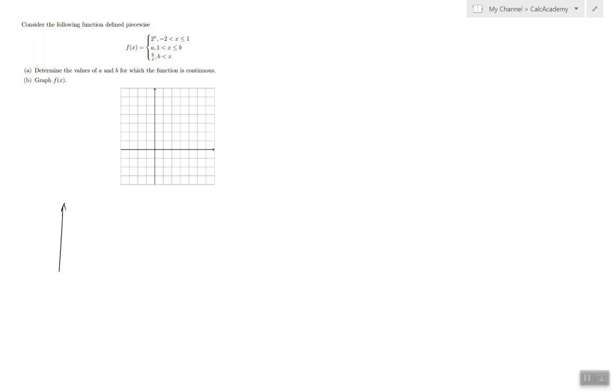Do we know what the graph of 2 to the x looks like? Yes, it's going to be something like this. Do you know what the graph of a looks like? Well, it's a constant function, it's just going to go through y equals a. And do we know what the graph of 6 over x looks like? Well, it looks like this.